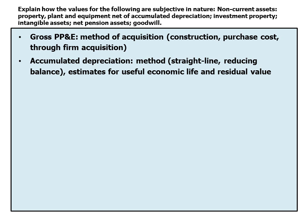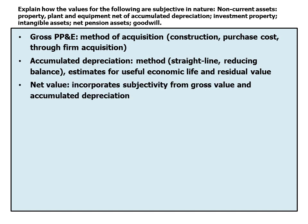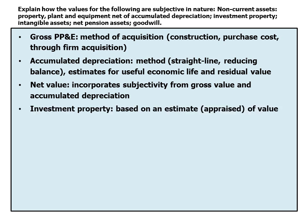Accumulated depreciation is determined by the method used — straight line or reducing balance — and management estimates for the asset's useful economic life and residual value. The net value of property, plant and equipment (gross less accumulated depreciation) therefore incorporates subjectivity from both the gross value and the accumulated depreciation.